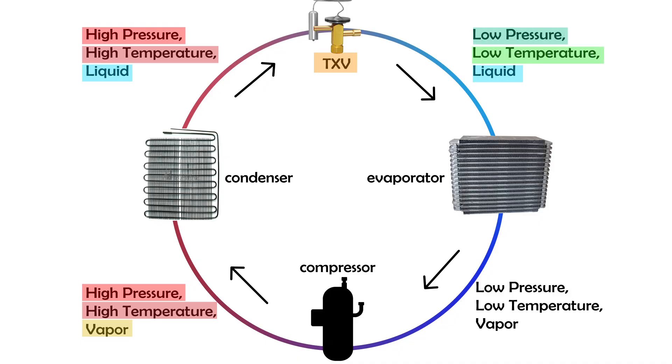This pressure drop is crucial because it allows the refrigerant to boil and absorb heat in the next step. Now, this low-pressure, low-temperature liquid enters the evaporator coil, usually located indoors.